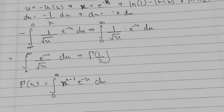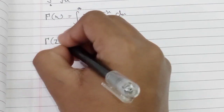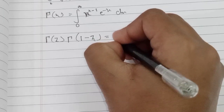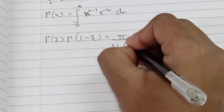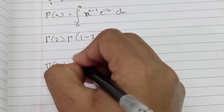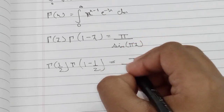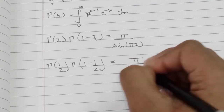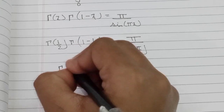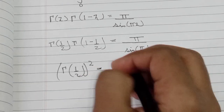To find Γ(1/2), we use Euler's reflection formula, which states that Γ(z) times Γ(1 − z) equals pi over sin(πz). Plugging in z equals 1/2, we get Γ(1/2) times Γ(1 minus 1/2) equals Γ(1/2) times Γ(1/2), which equals pi over sin(π/2). Since sin(π/2) equals 1, we get Γ(1/2) squared equals pi.